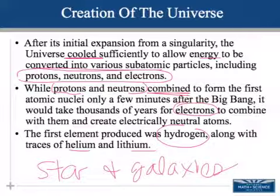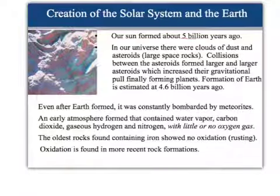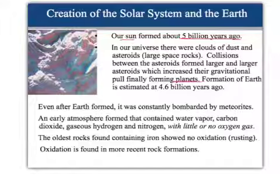Giant clouds of hydrogen, helium, and lithium would come together through gravity to form stars and galaxies. The heavier elements would be synthesized within the stars or during a supernova. The Sun formed about 5 billion years ago. There were lots of dust clouds and asteroids, and as these asteroids were colliding together, they would eventually start to form planets.